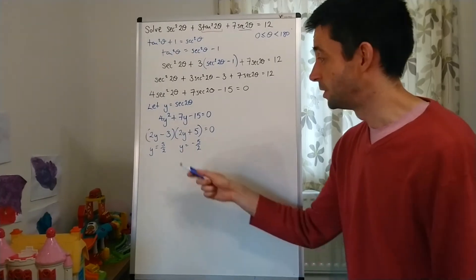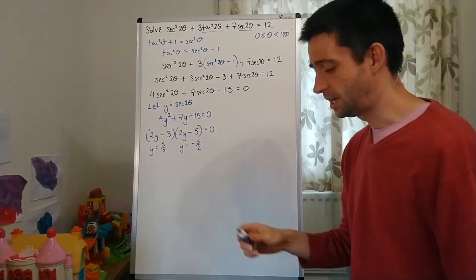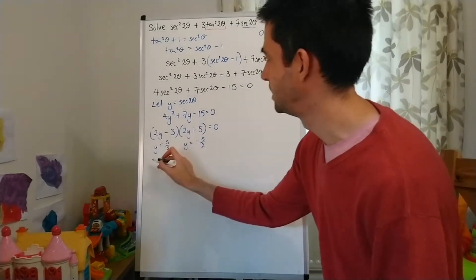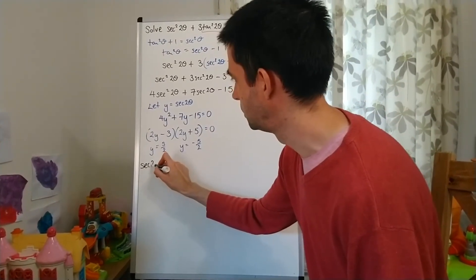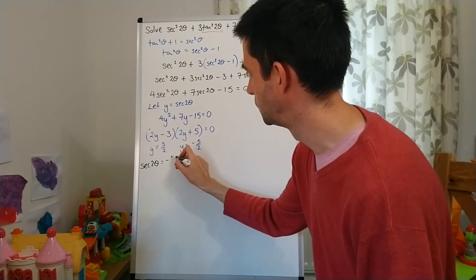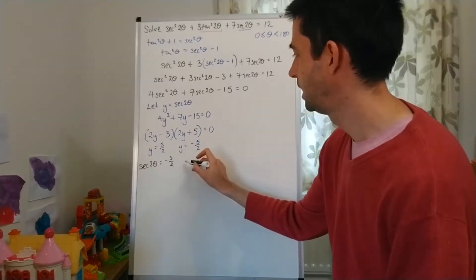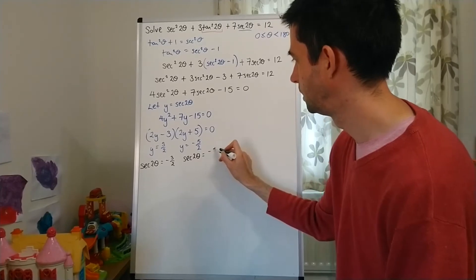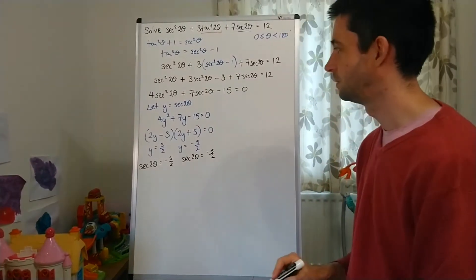Now, remember that it's not y that I'm really interested in. It's sec2θ. So, I'm going to replace that y with sec2θ = -3/2. And then here, sec2θ = -5/2.